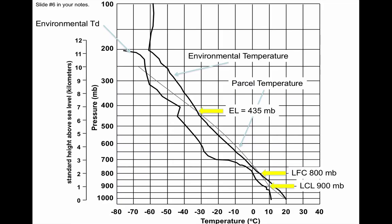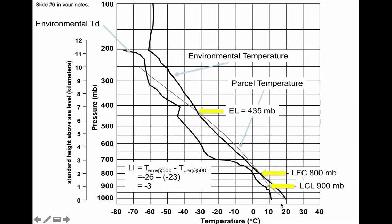Let's find cloud base — the LCL, the lifting condensation level. To find this, look at the parcel line for the very distinct kink where it goes from cooling at 10 degrees Celsius per kilometer to 6. These are the major components we're trying to understand.